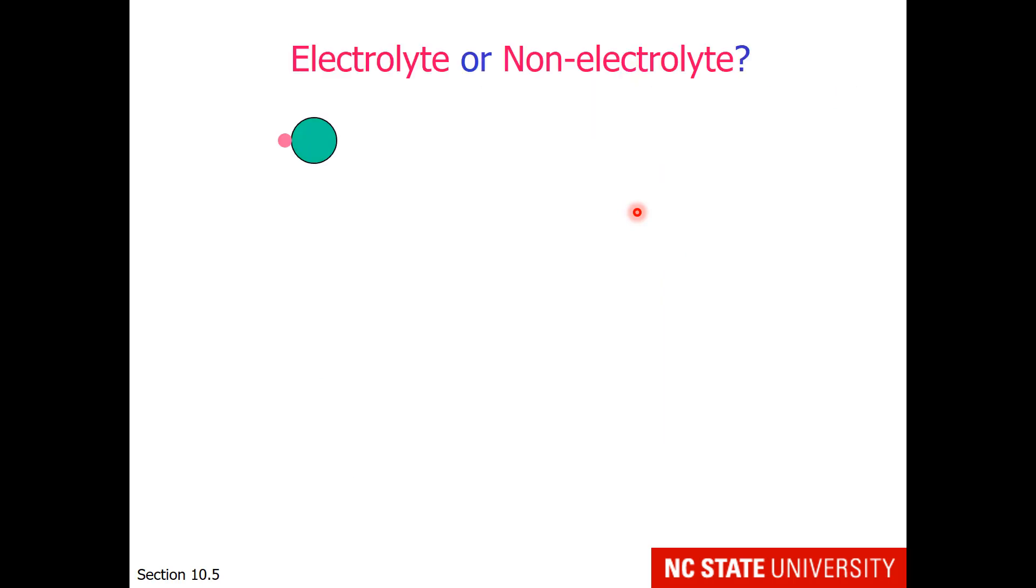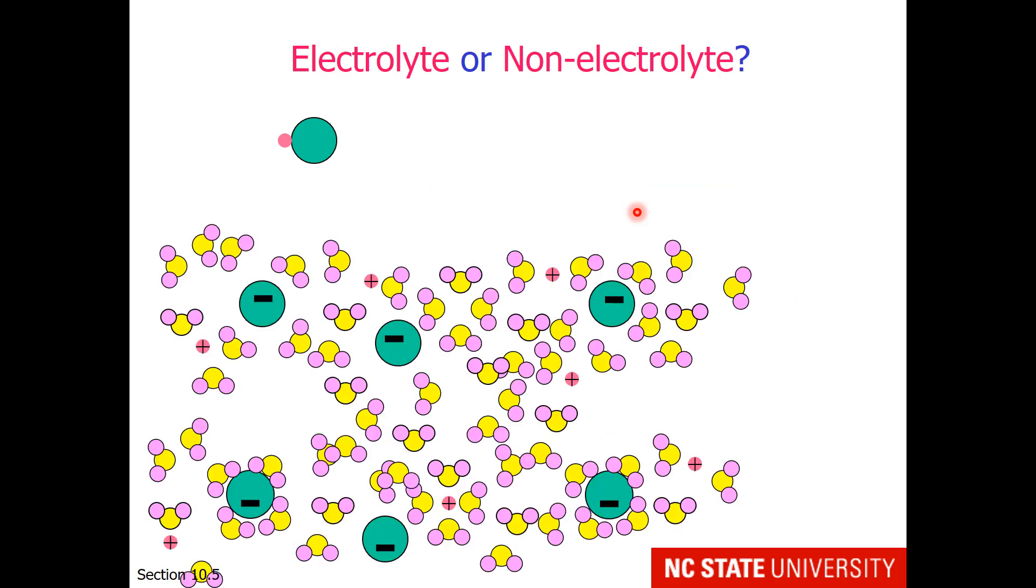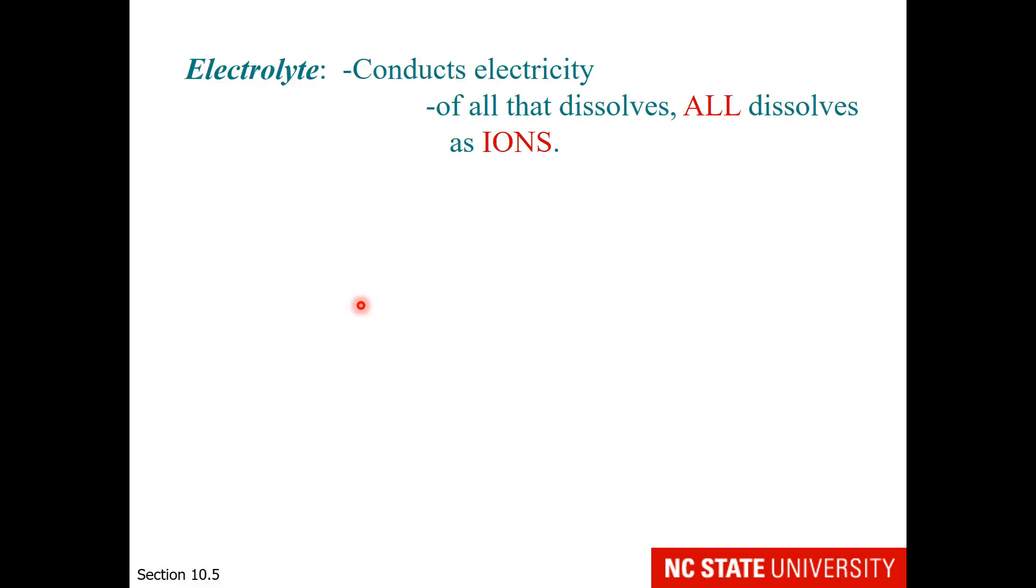How do we identify electrolytes? Place them in water and the bond separates into an anion and a cation. Everything that we placed in solution formed ions, so this is an electrolyte. Electrolytes conduct electricity, and when they dissolve, they form ions.